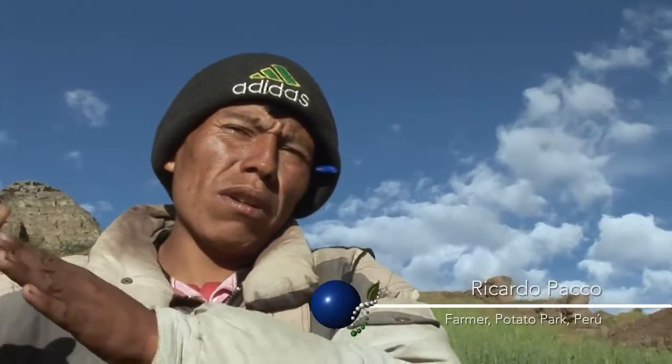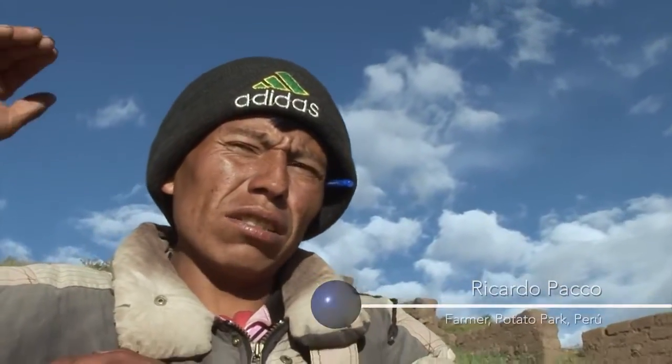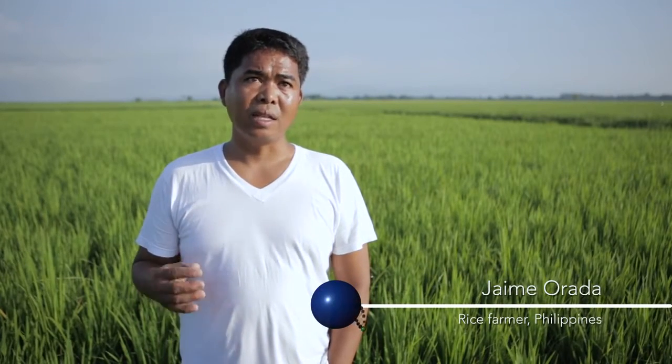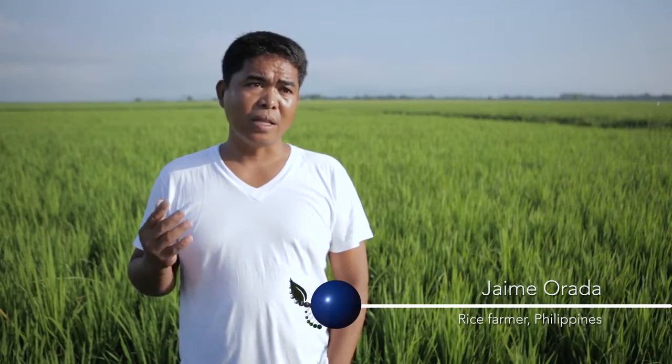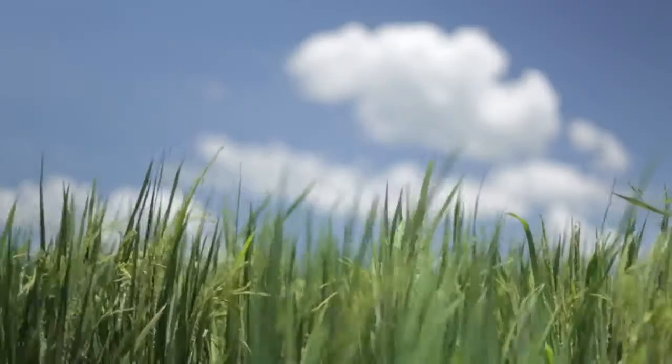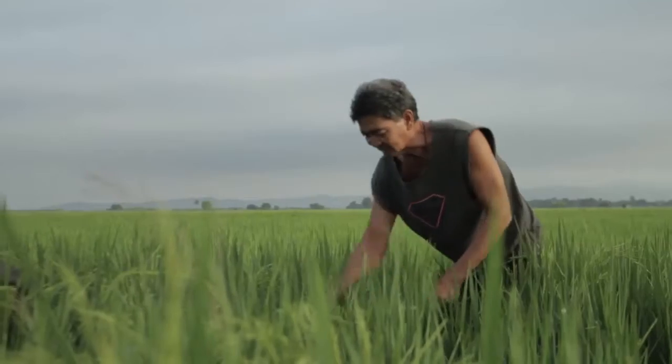Because of this changing climate, we go higher and higher for cultivation. Now we are at 5,000 meters. Rainy season is also one of the problems that we encounter. During rainy days, strong winds make our rice grains fall. When rice grains fall, we only harvest 50% of it.